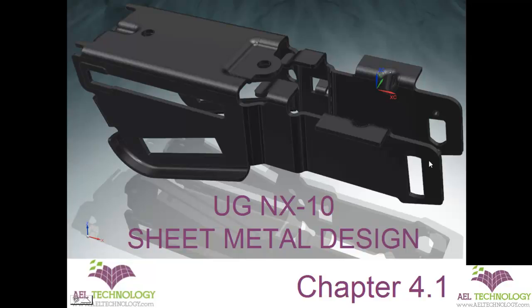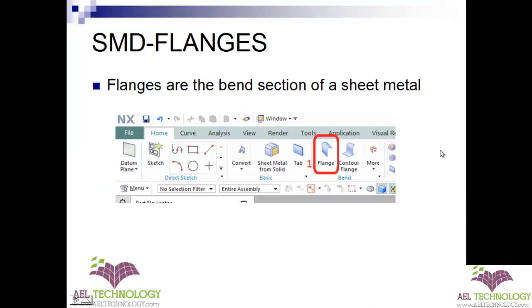Hello and welcome to a new session of UGNX10 sheet metal design. We are in chapter 4.1, and in this chapter we will be dealing about creating flanges in UGNX10. Flanges are nothing but a bent section of a sheet metal. If you want to create a flange, go to the sheet metal module and under the bend menu you can click on the flange icon.